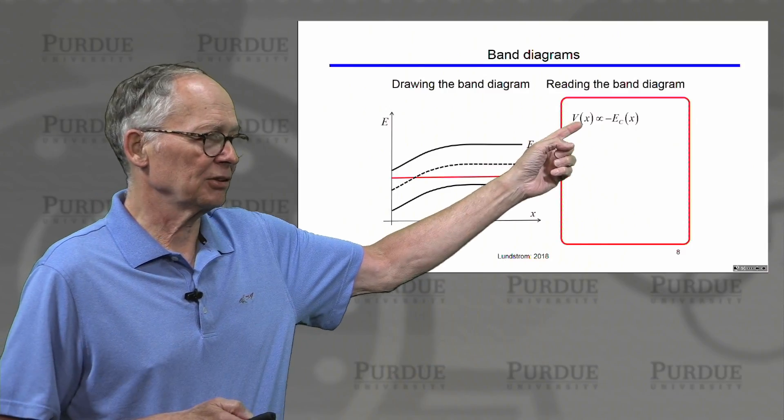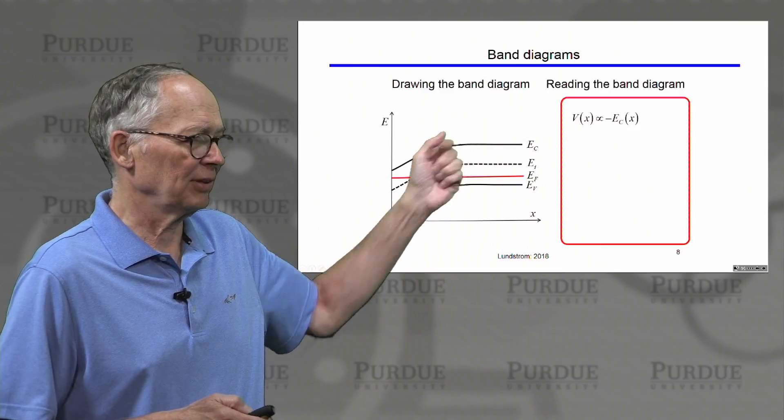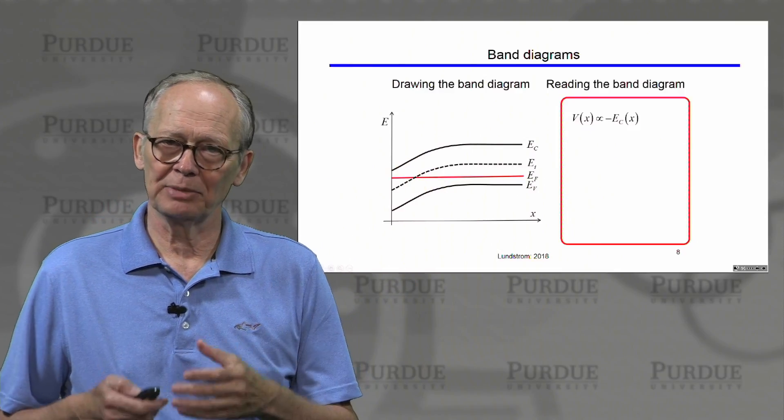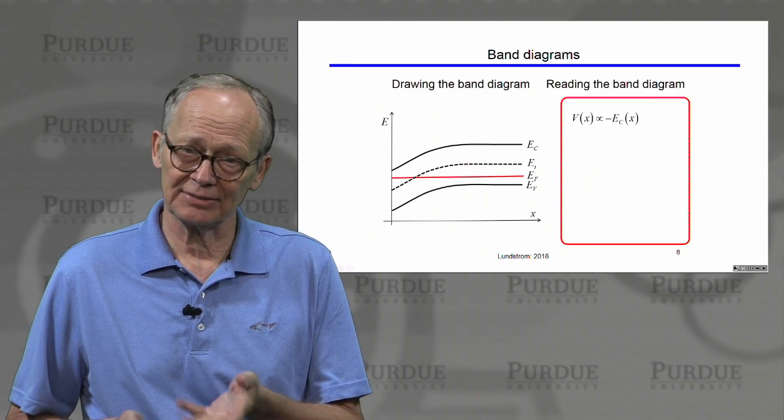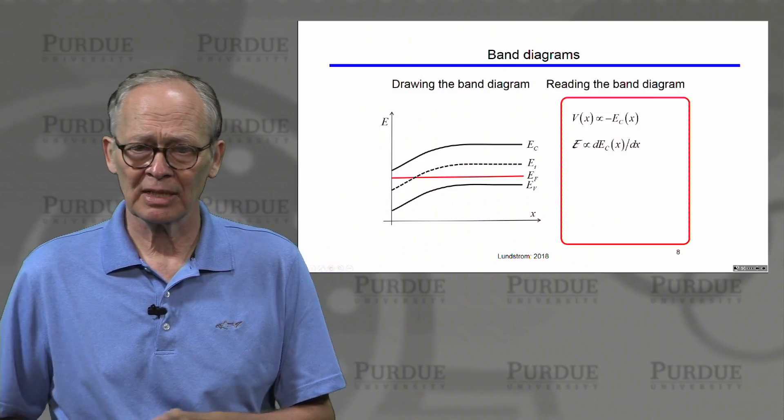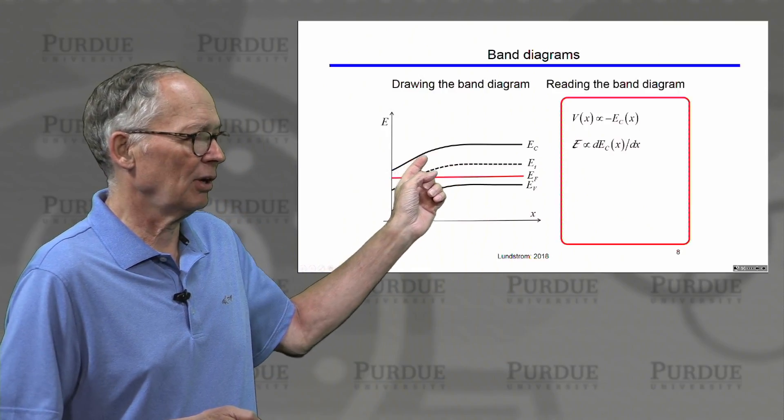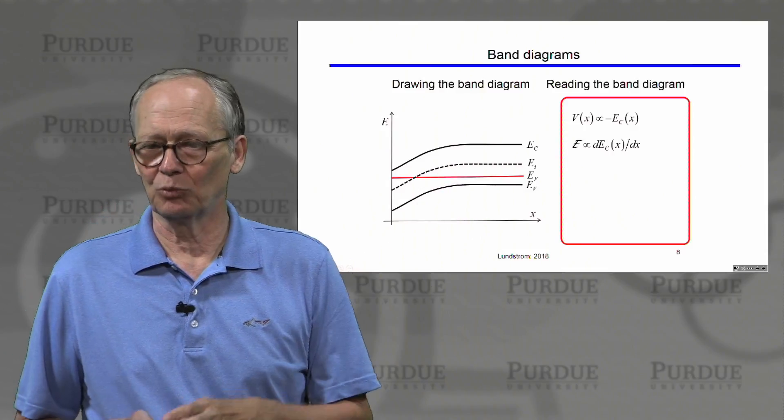We can determine the electrostatic potential simply by flipping conduction band, valence band, or intrinsic level upside down. That gives us potential versus position. We can read the electric field off by just taking the slope of one of those bands.